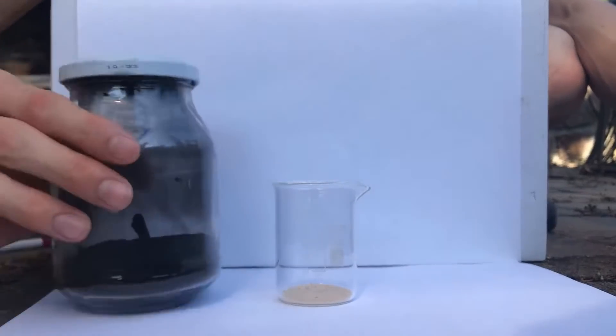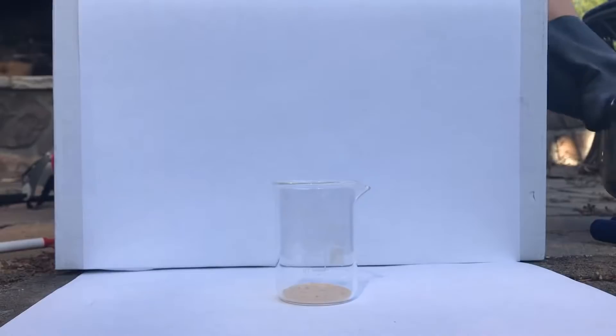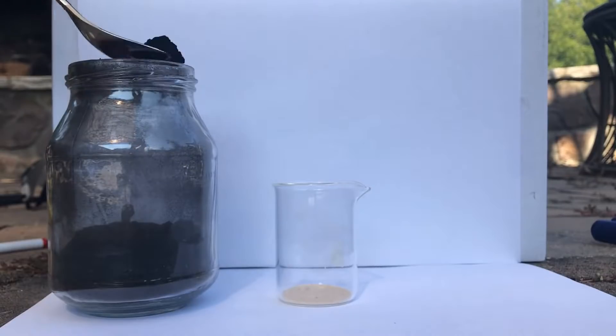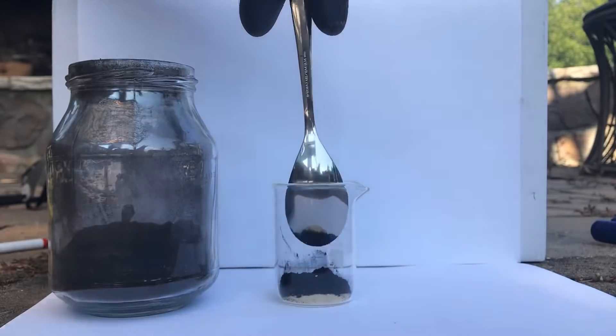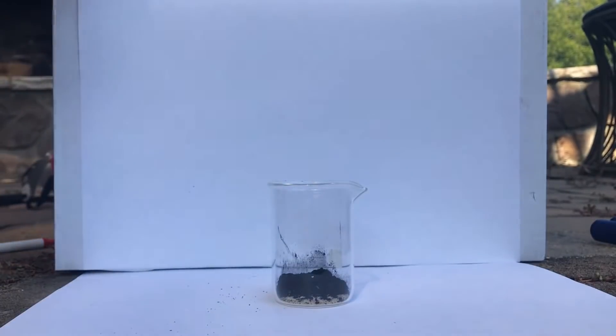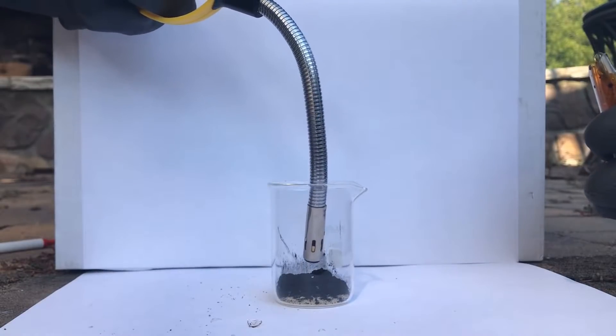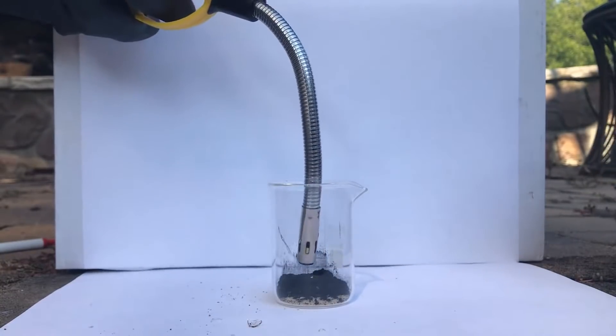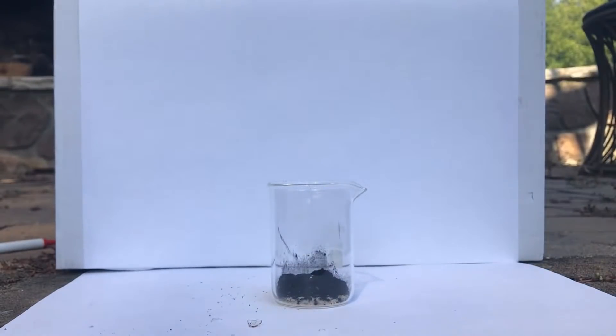Okay so now we're going to react charcoal or carbon with bromine. Okay so now we're going to first put in some charcoal. I'll put it on right there, putting a little bit more. Okay, let's go.